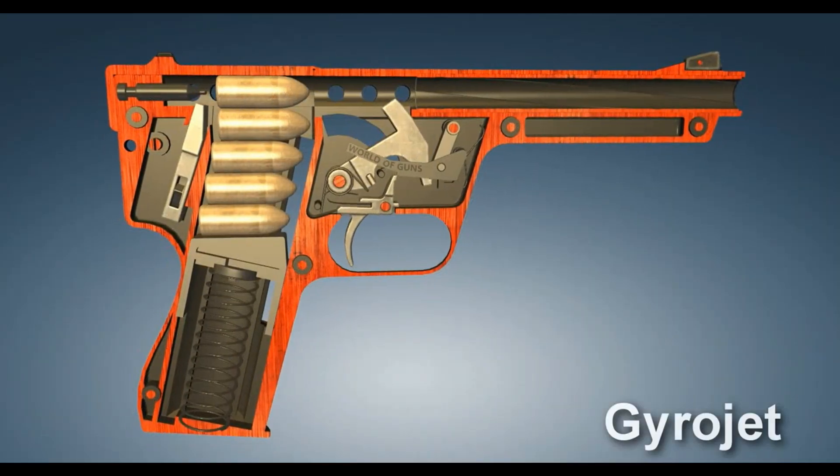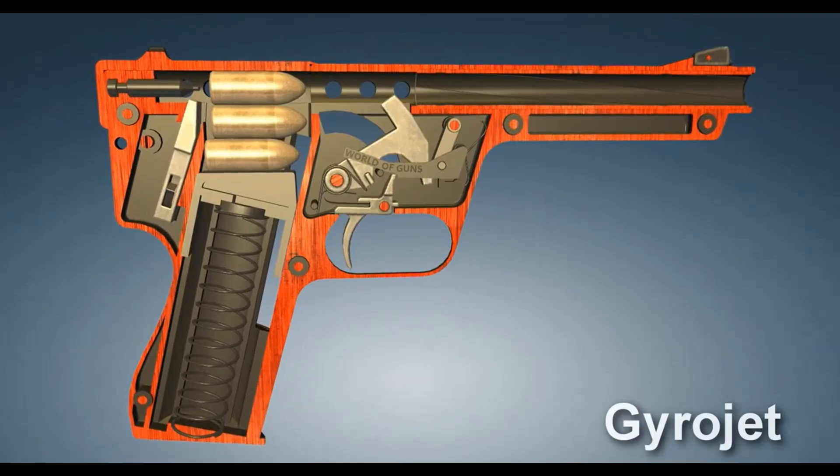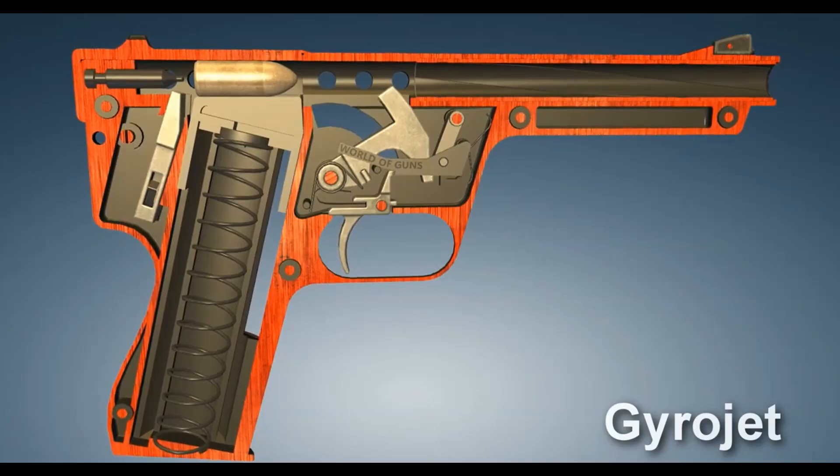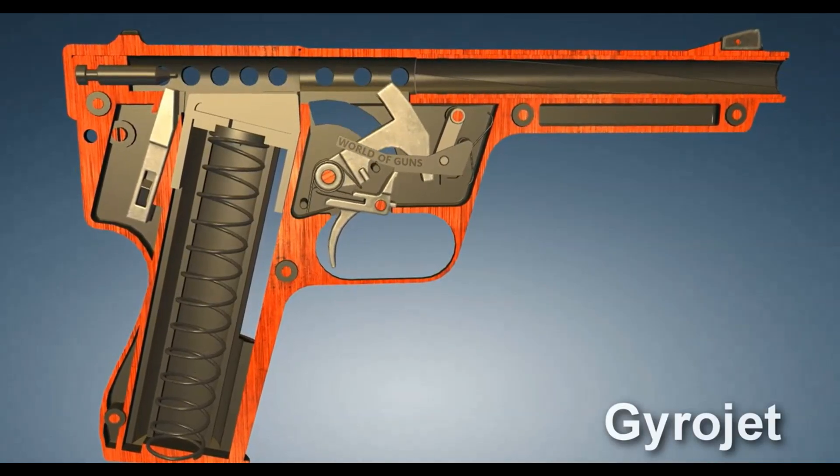Using the GyroJet as inspiration, we can design a theoretical bolt pistol mechanism that matches the lore, a weapon firing miniature self-propelled rockets rather than traditional bullets.